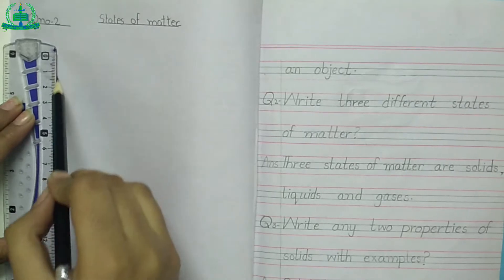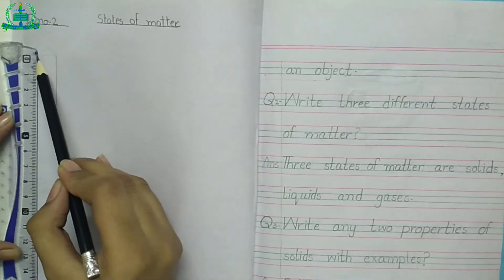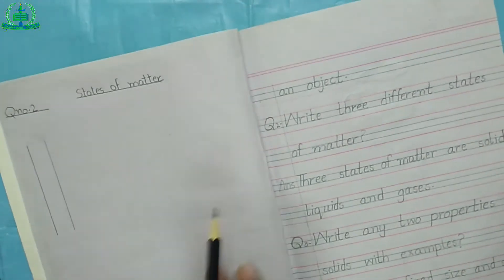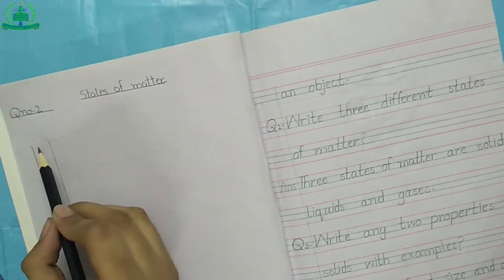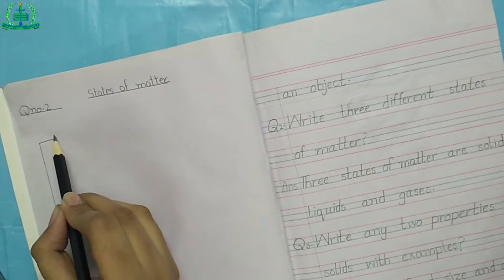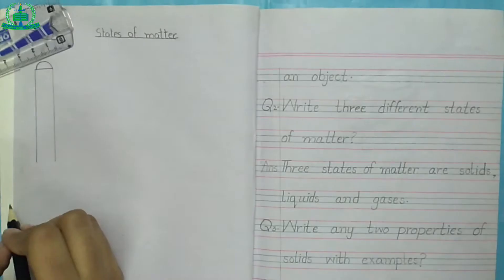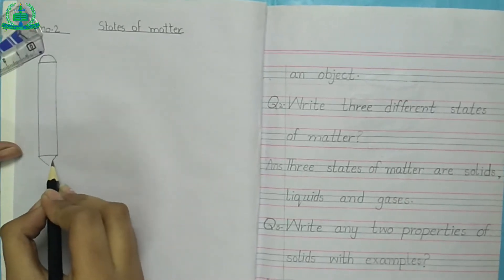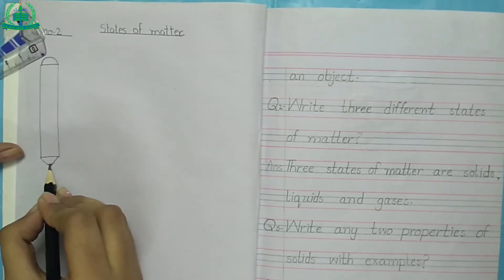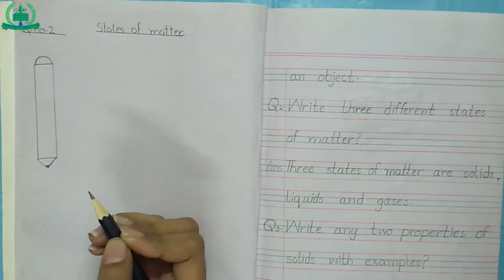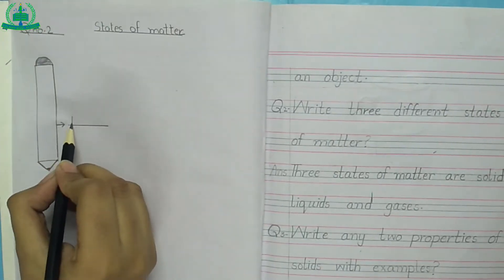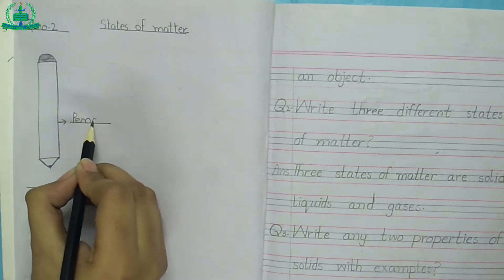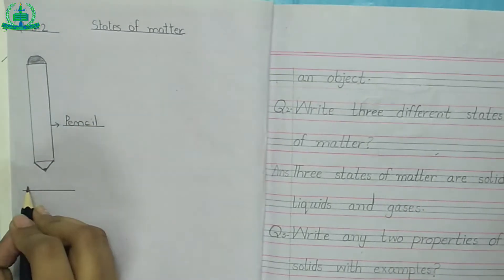First we draw two straight lines. Then join these lines. Then make small triangle. Pencil is an example of solid.